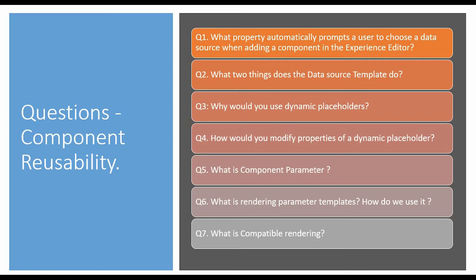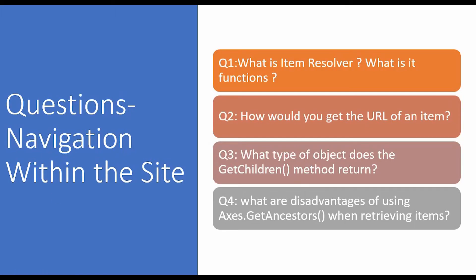The next set of questions is from the topic of navigations within the site. The first question is: what is an item resolver, what is its function, and how do we use it? The second question is: how do you get the URL of an item? The third question is: what type of object does the GetChildren method return?